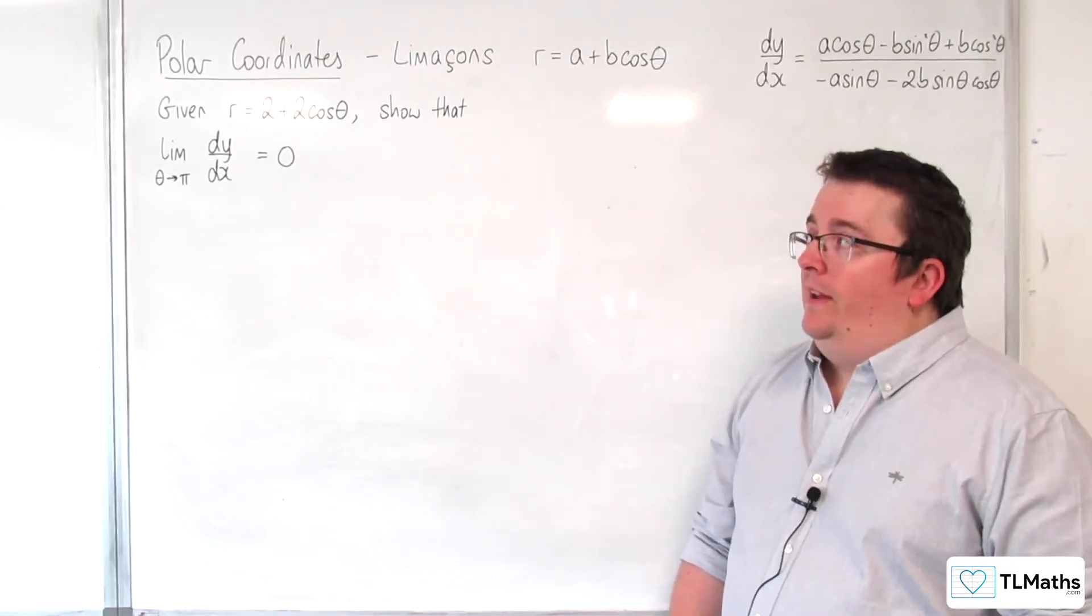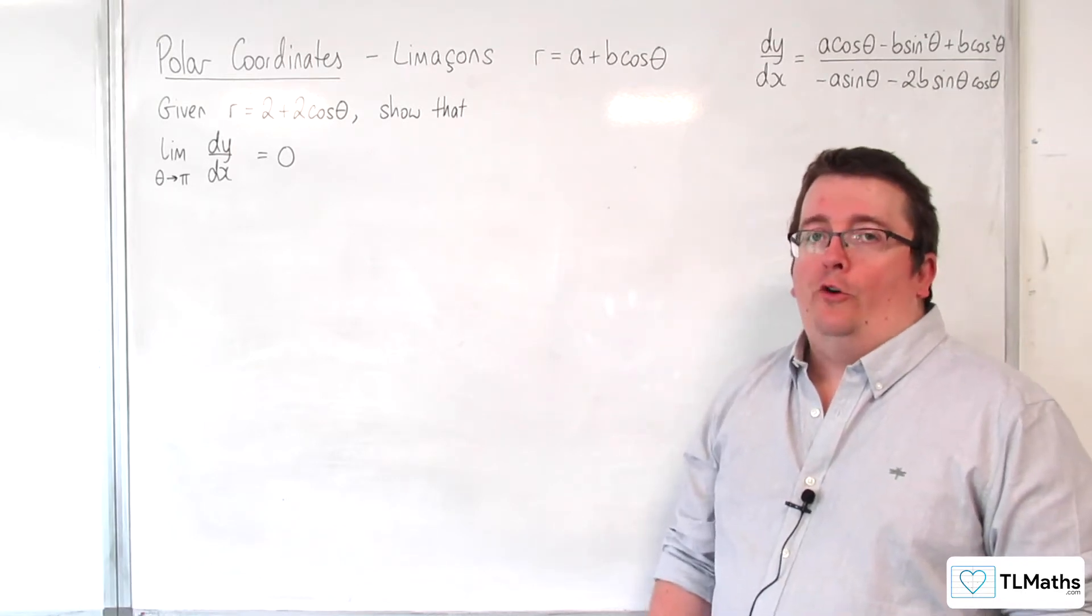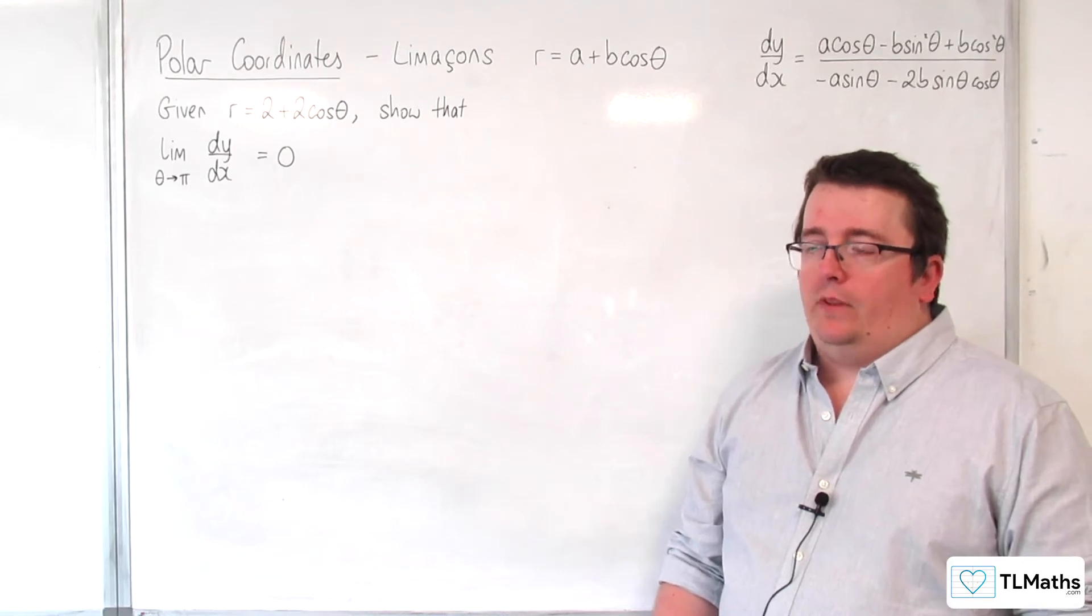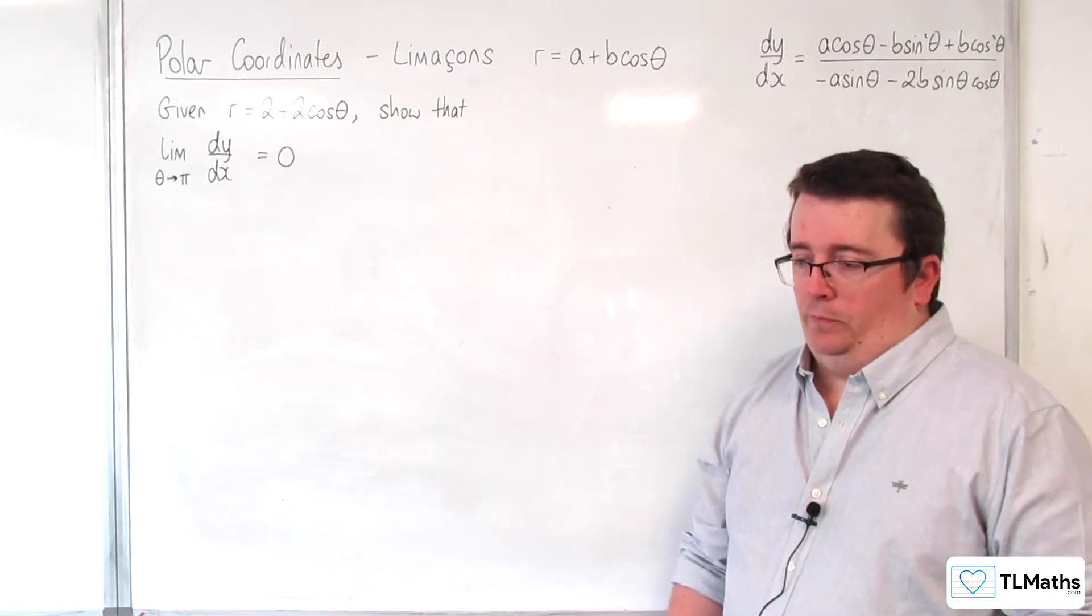We're going to show that the limit as theta tends to pi of dy by dx is equal to 0. Now at theta equals pi,